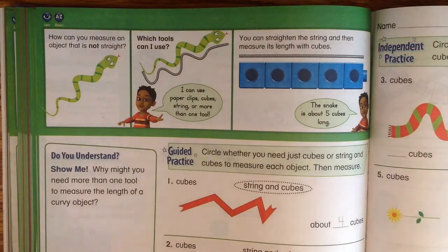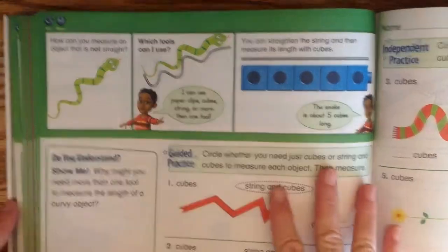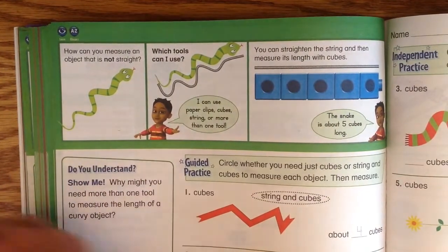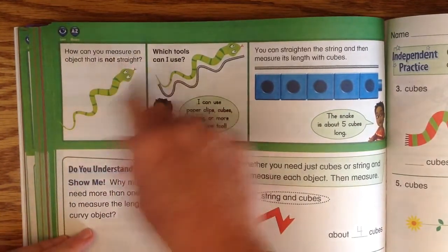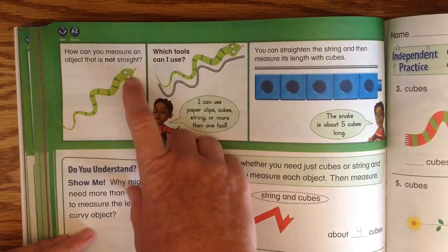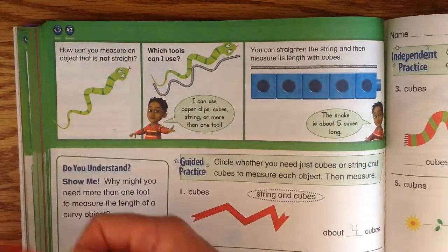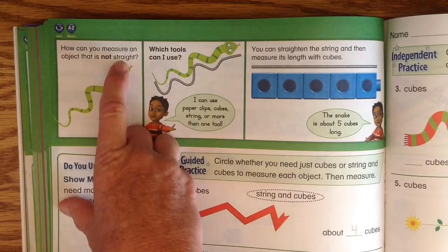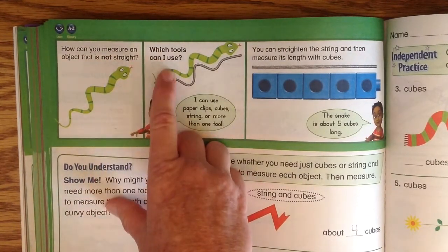Hi everybody. Today we're going to work on lesson 12-5 in our math book starting on page 692. The lesson is talking about how are you measuring things that are not straight? How can I measure something that's crooked and wiggly with something that is solid? So it says how can you measure an object that is not straight? Which tools can I use?